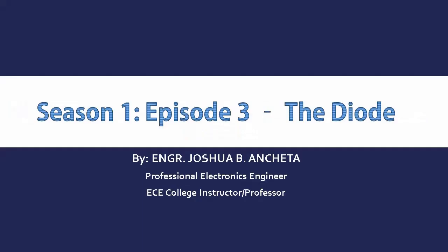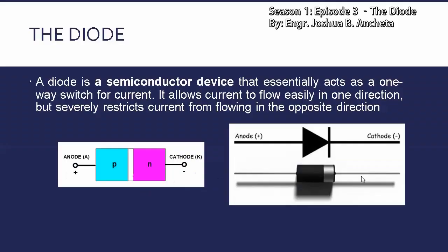Simulan na natin. For this episode, episode 3, we will discuss the diode. A diode is a semiconductor device that essentially acts as a one-way switch for current. It allows current to flow easily in one direction, but severely restricts current from flowing in the opposite direction.